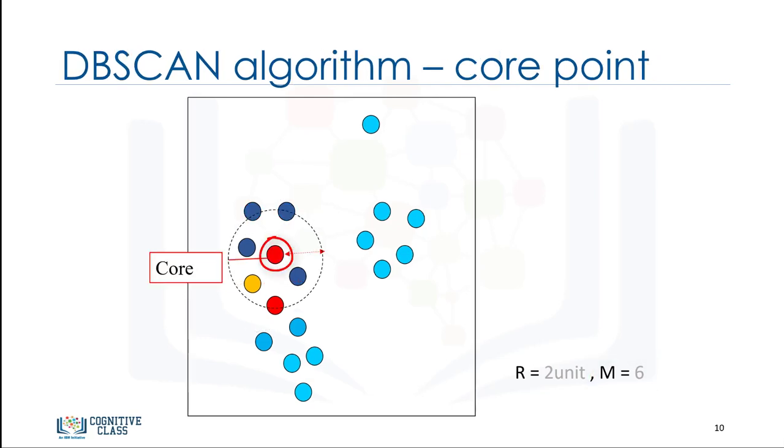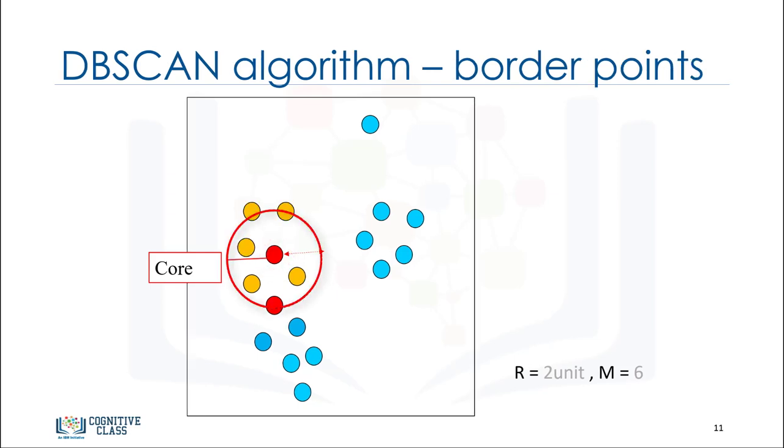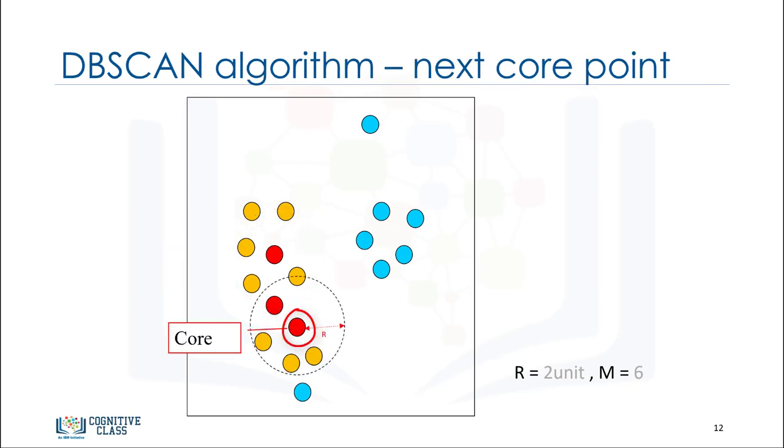We continue with the next point. As you can see, it is also a core point. And all points around it which are not core points are border points. Next core point, and next core point.